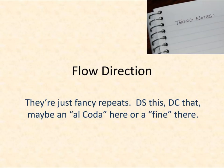Welcome back to Music Teacher Videos. Today we're talking about flow direction. This covers what's basically a fancy repeat — anytime you see the DS, which is the abbreviation for Dal Segno, the DC, that's the abbreviation for Da Capo, or something like Al Coda or Al Fine.